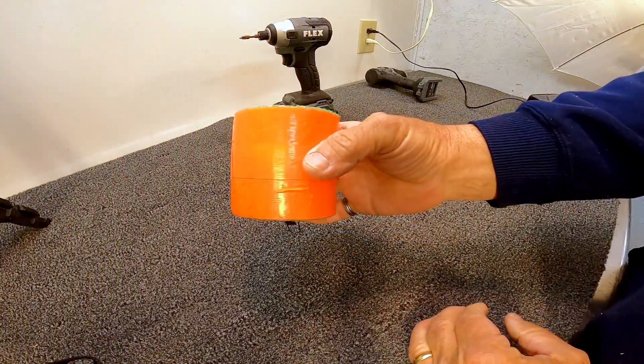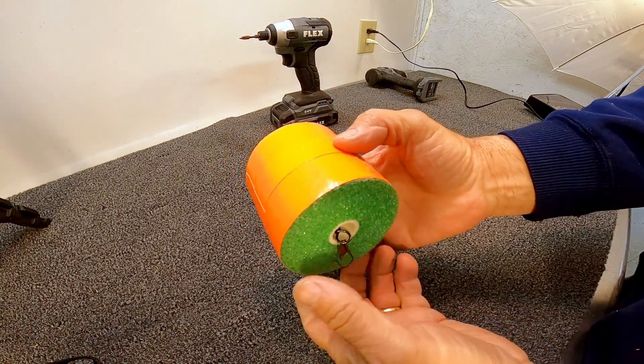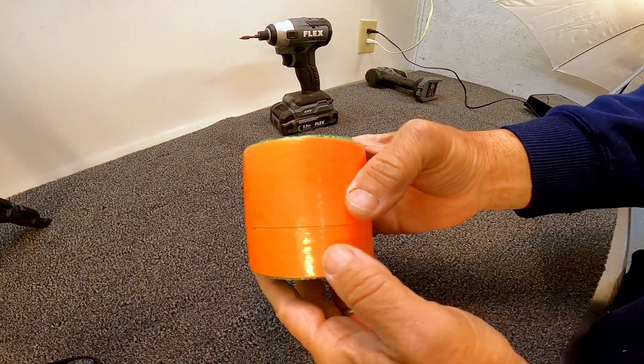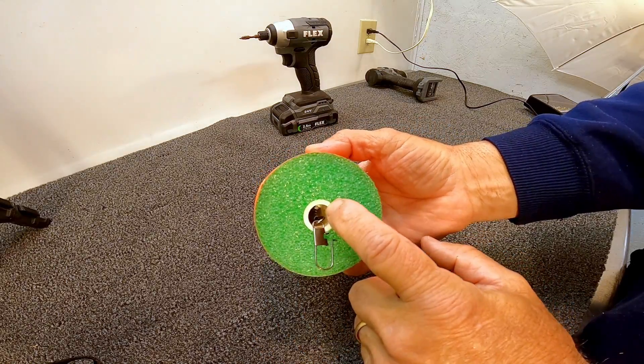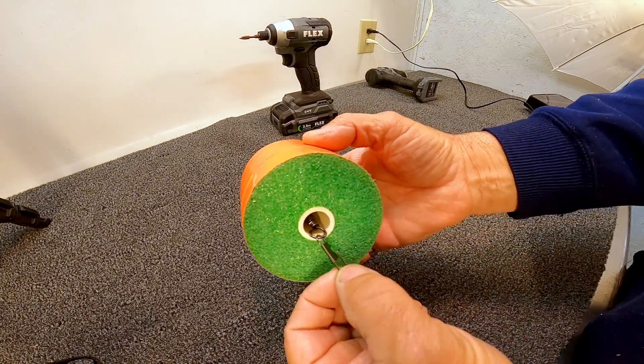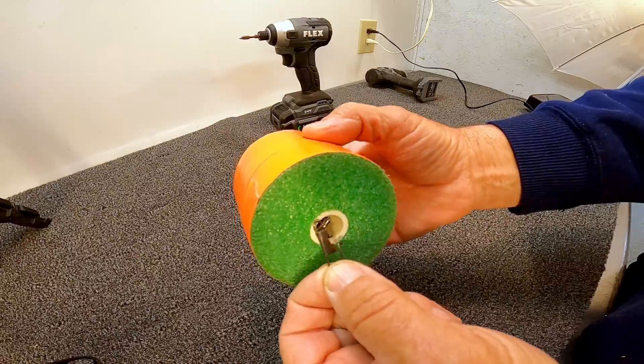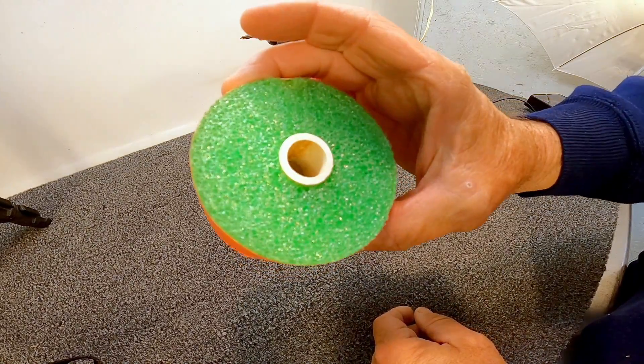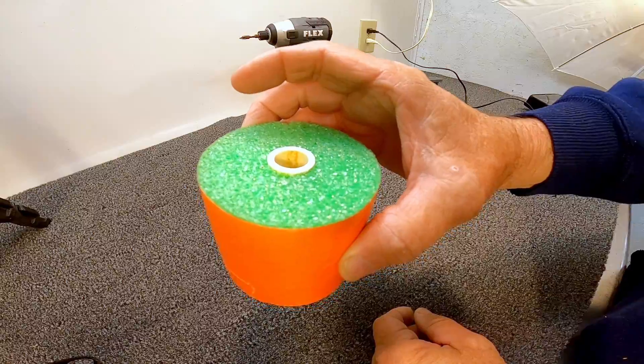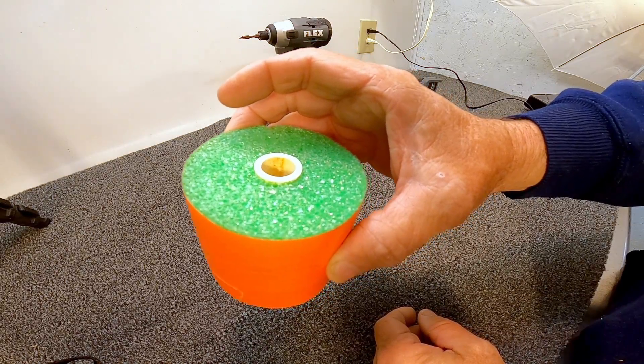All right guys, this is what we're going to work on today. This is one of these floats that you keep seeing me fish with. It's basically a piece of PVC pipe inside of a pool noodle. It's got a swivel in it and it's a pretty basic thing. We're going to try to build one for you here and show you how this thing works.